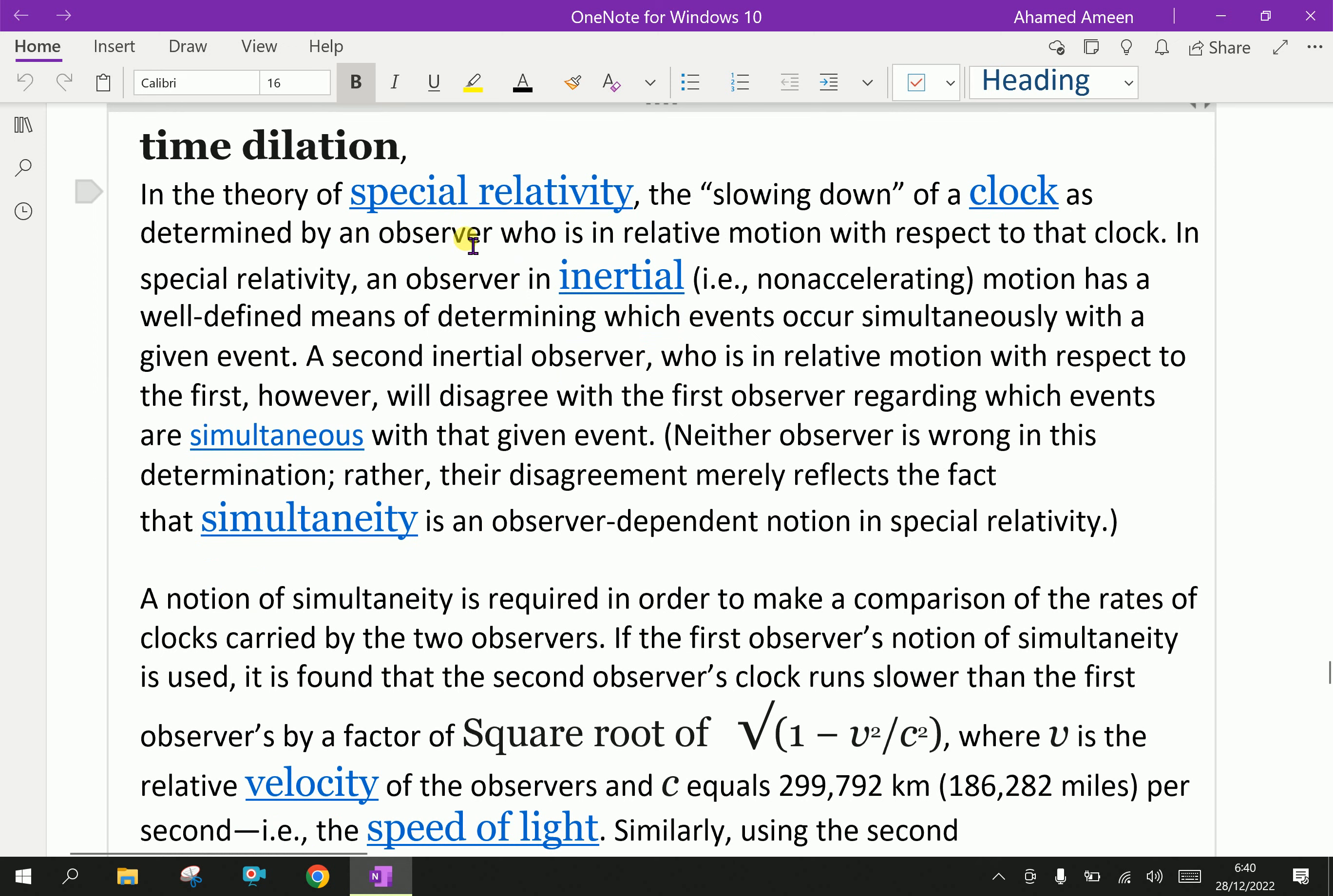In the theory of special relativity, the slowing down of a clock as determined by an observer who is in relative motion with respect to that clock. In special relativity, an observer in inertial motion has a well-defined means of determining which events occur simultaneously with a given event. A second inertial observer who is in relative motion with respect to the first, however, will disagree with the first observer regarding which events are simultaneous.